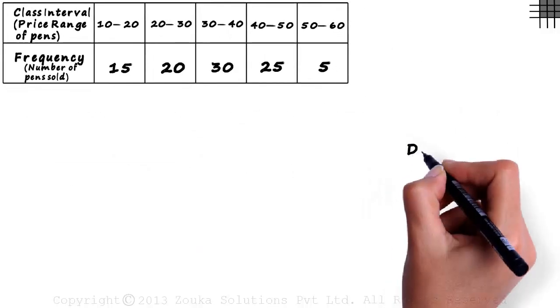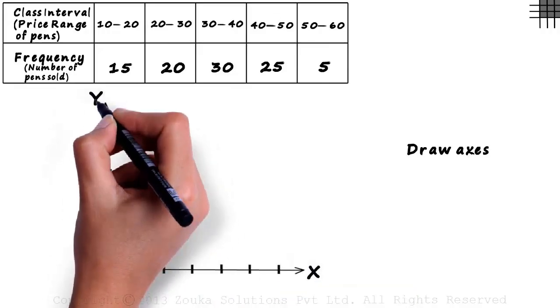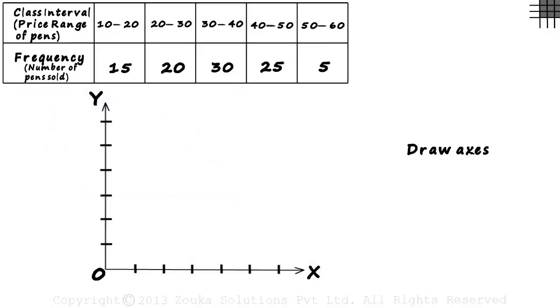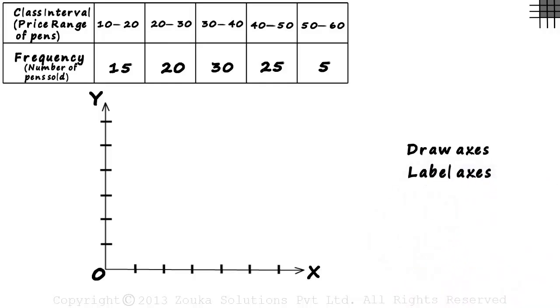The first thing that we do is draw the x and the y axis. We draw the axis and make equal intervals on each of them. Then we label the axis. Since we want to represent the quantity of each class interval, we have the pens sold in the y axis and the price range of pens on the x axis.